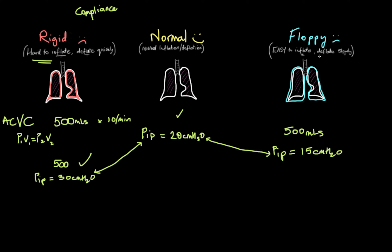You might think lower peak pressures sounds good — and inspiration does become easier — but the lungs also deflate very slowly because they lack recoil. Breathing is a two-way street: you inhale, then exhale. These lungs inflate easily but are floppy on exhalation too, so they deflate very slowly. Not all the gas comes out before the next breath delivers another 500 mils. Eventually the lungs become more and more filled, leading to what we call hyperinflation — you can see the flattened diaphragms here and the elevated lung volume.